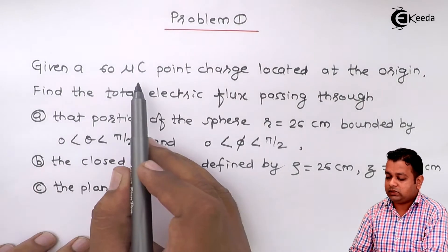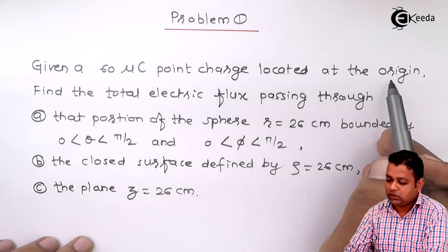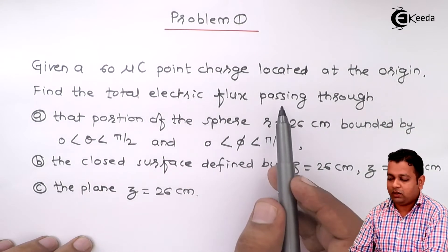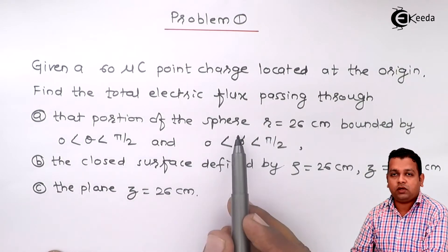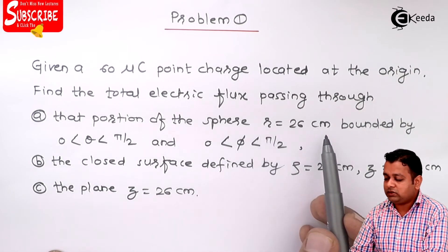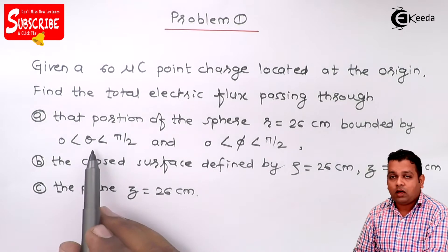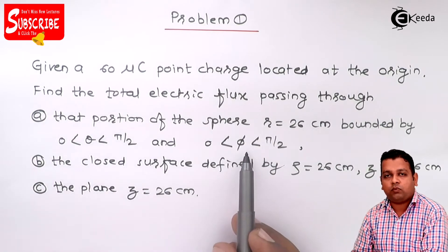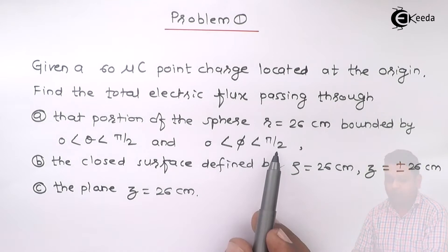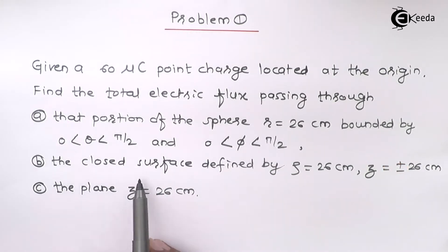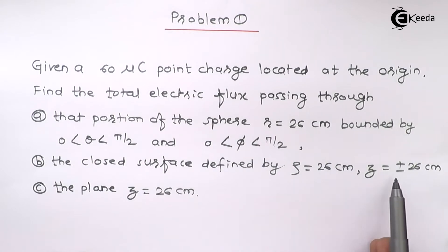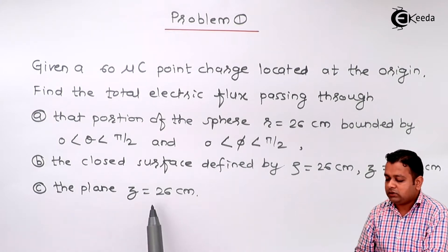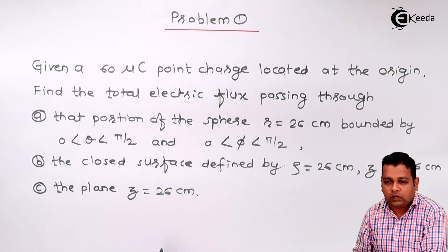Given a 60 microcoulomb point charge located at the origin, find the total electric flux passing through. We have three parts: first, that portion of the sphere having radius 26 cm bounded by theta ranging from 0 to pi/2 and phi ranging from 0 to pi/2. In the second part, the closed surface defined by rho equal to 26 cm, z equal to plus or minus 26 cm. And in part C, the plane z equal to 26 cm.